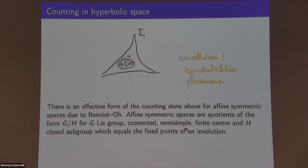This is a general result in dynamics for spaces that have negative curvature. There's a bigger tool we can use — we don't have to be restricted to Euclidean space. There's an effective form of this counting done for affine symmetric spaces, a more general class than hyperbolic space. These affine symmetric spaces are quotients of the form G/H, where G is a Lie group and H is a closed subgroup which is the fixed point of an involution. Affine symmetric spaces turn up in nature a lot. This is the main tool I'm going to use, and now I'll talk about number theory and how to apply this tool to problems in number theory.